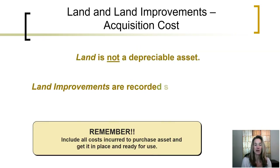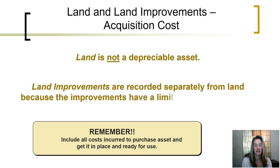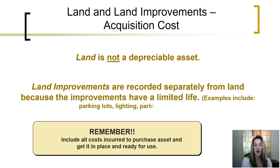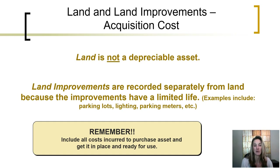One long-term asset is land. Land is not a depreciable asset. In other words, land is not an asset that we need to spread its cost over the life, because it is not going to ever run out or be used up. So land is the one long-term asset that we do not depreciate.